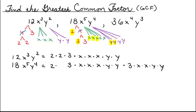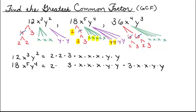I like to still write the leftover factors down anyway because they're very useful if you need to find the least common multiple. Now for the next term, 36x⁴y³. Let's factor out 36: six times six is 36, and each six factors into two times three. I'll cross out the sixes. Then x to the fourth factors into four factors of x, and y cubed factors into three factors of y.